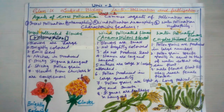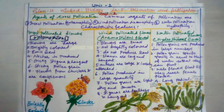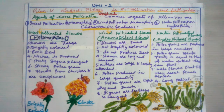In Unit 1, Lesson 5 on pollination and fertilization, you have learned the types of pollination, how nature favors self-pollination, how nature favors cross-pollination, advantages and disadvantages of self-pollination, advantages and disadvantages of cross-pollination, and differences between self-pollination and cross-pollination. I think you have learned them thoroughly.